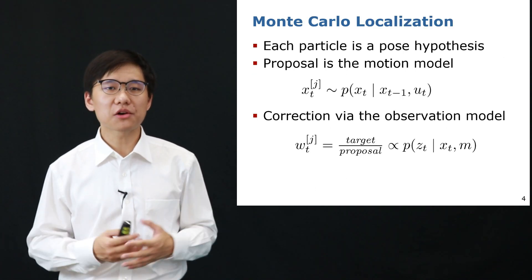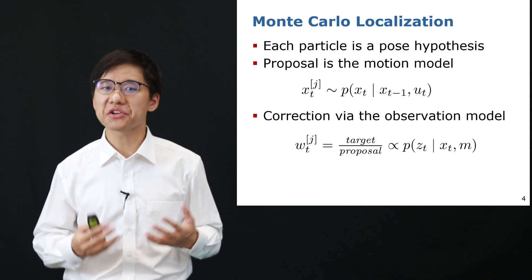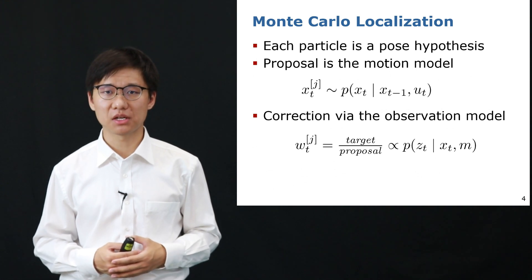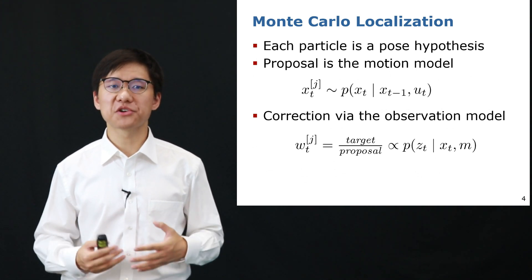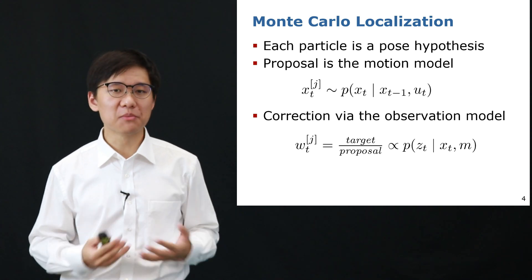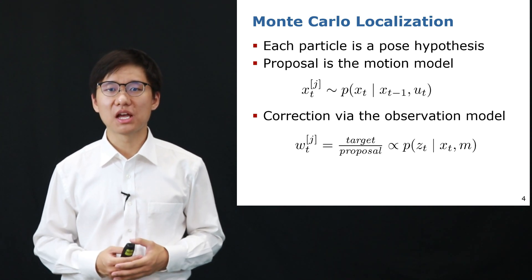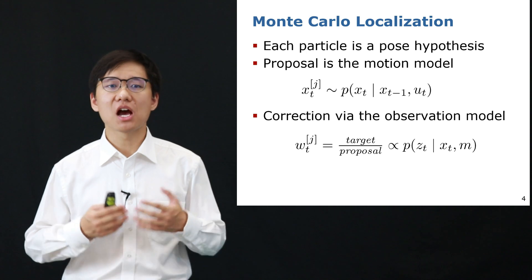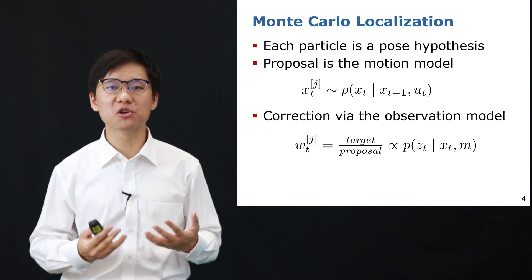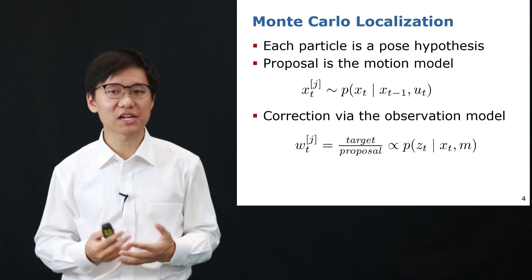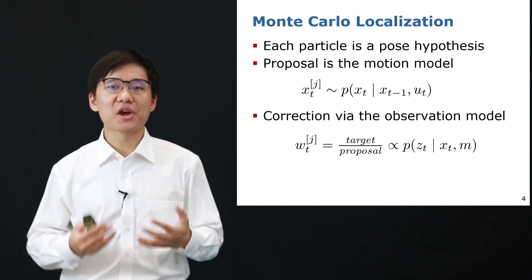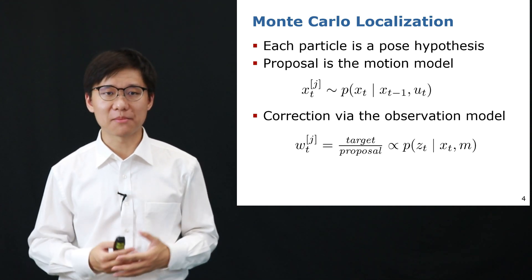Monte Carlo localization is also called particle filter-based localization, which basically has two steps. It first takes sampling from a motion model with particles, and each particle represents a hypothesis of where the robot is at the current point in time, given we know where it was before and the odometry commands.